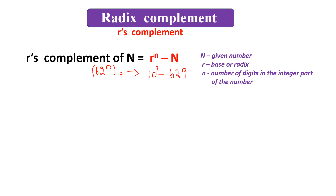Consider another example: 0.784, which is also a base 10 number. This number has only the fraction part — there is no integer part. The base is 10, and since there is no integer part, n becomes 0. So the formula gives 10 to the power of 0, minus 0.784.